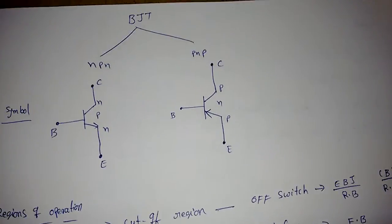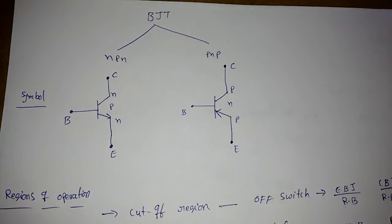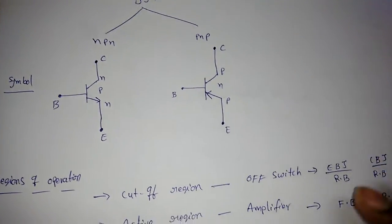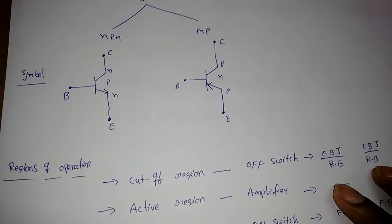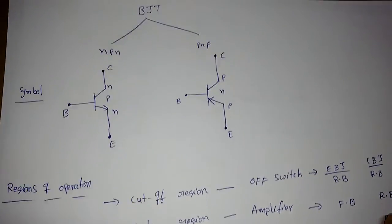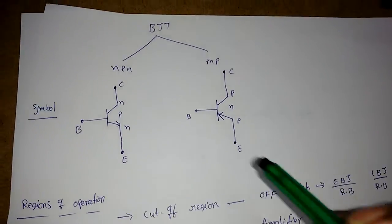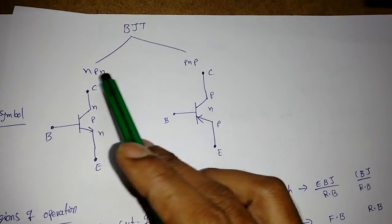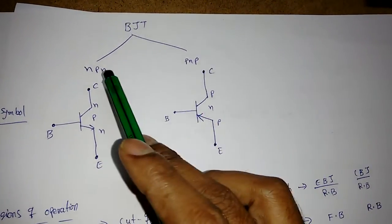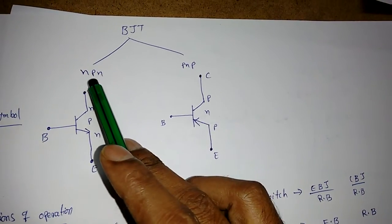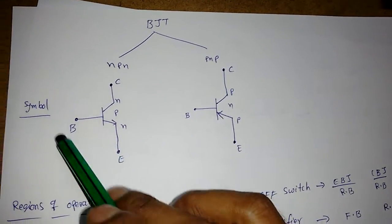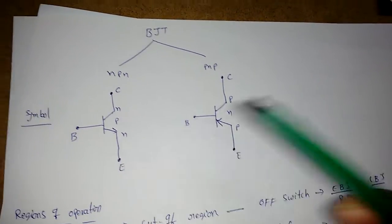We are going to discuss in detail the conditions for active region, saturation region, and cutoff regions. Before that, there are two types of transistors: NPN and PNP transistors.